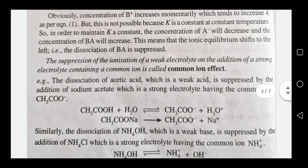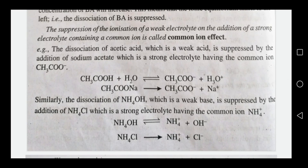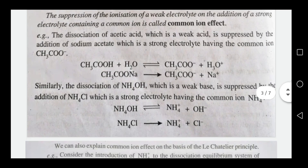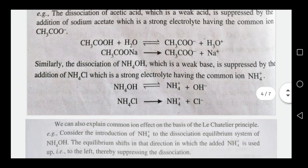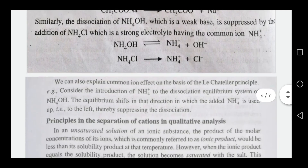For example, acetic acid is a weak acid. When we add a strong electrolyte such as sodium acetate, the dissociation of acetic acid is suppressed — this is the common ion effect. Similarly, ammonium hydroxide is a weak base; when we add ammonium chloride (a strong electrolyte), the dissociation of ammonium hydroxide is suppressed by the common ion effect.